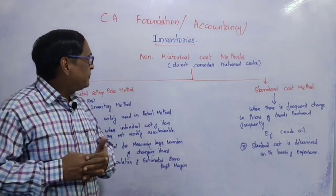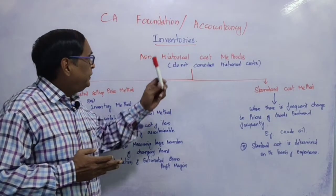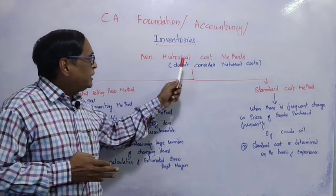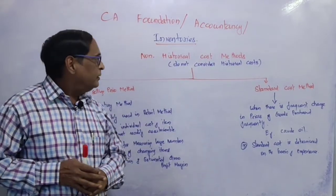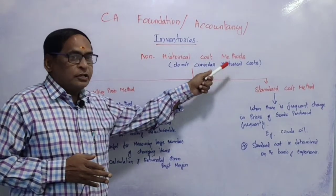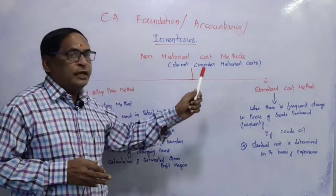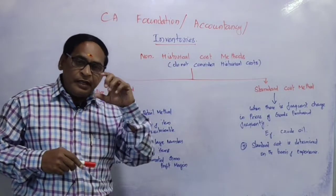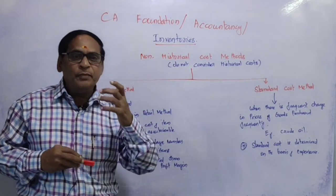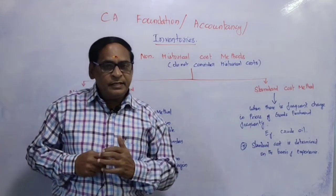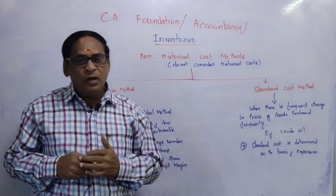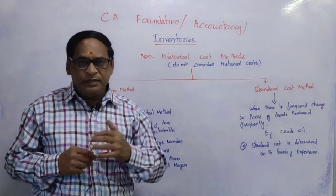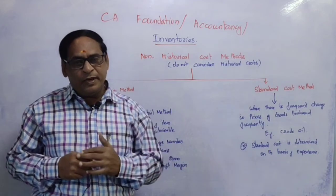My dear students, today let us see inventories for CA Foundation course in accounts — specifically the non-historical cost method. Non-historical cost method means it does not consider historical cost. We had already seen historical cost. Under historical cost, there are four or five methods: the first is First In First Out (FIFO), then Last In First Out (LIFO), then Average Price Method, and then Weighted Average Price Method.